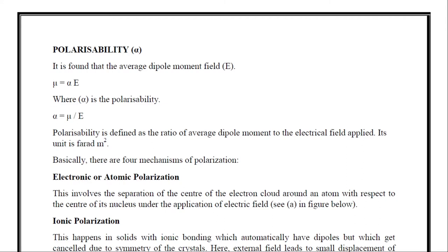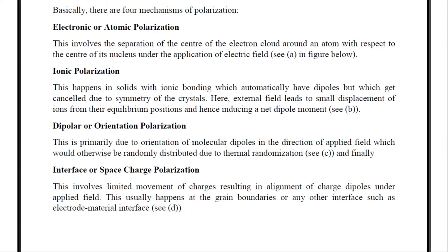The four mechanisms of polarization: First is electronic or atomic polarization. This involves the separation of the center of the electron cloud around an atom with respect to the center of its nucleus under the application of an electric field. The negative charge center of the electron cloud and the positive charge center of the nucleus are separated by the applied field — this is called electronic or atomic polarization.